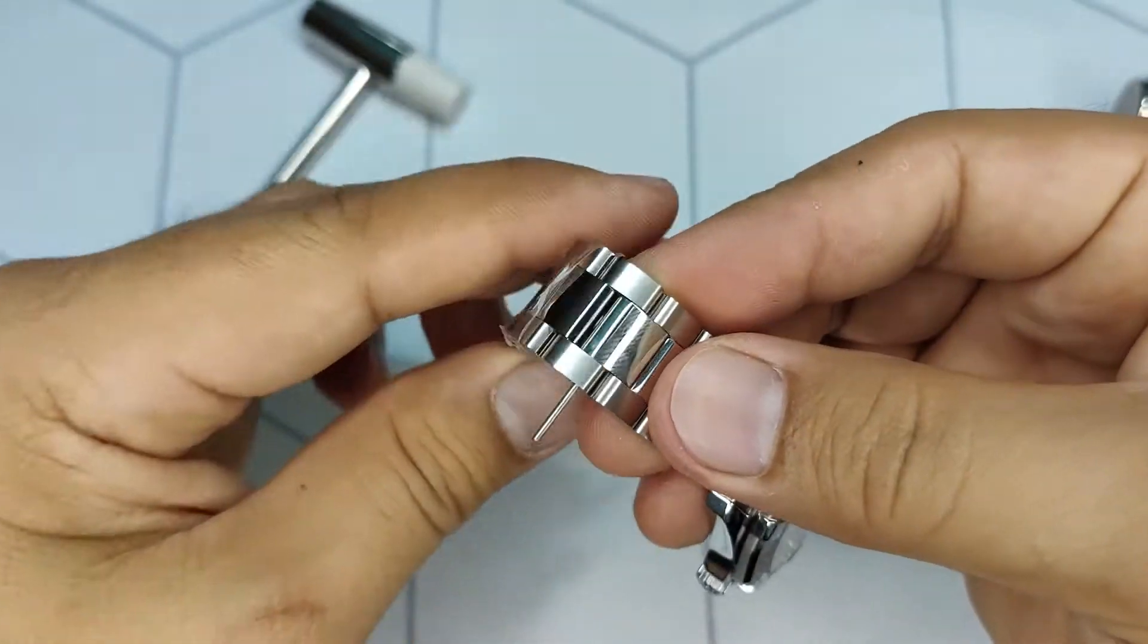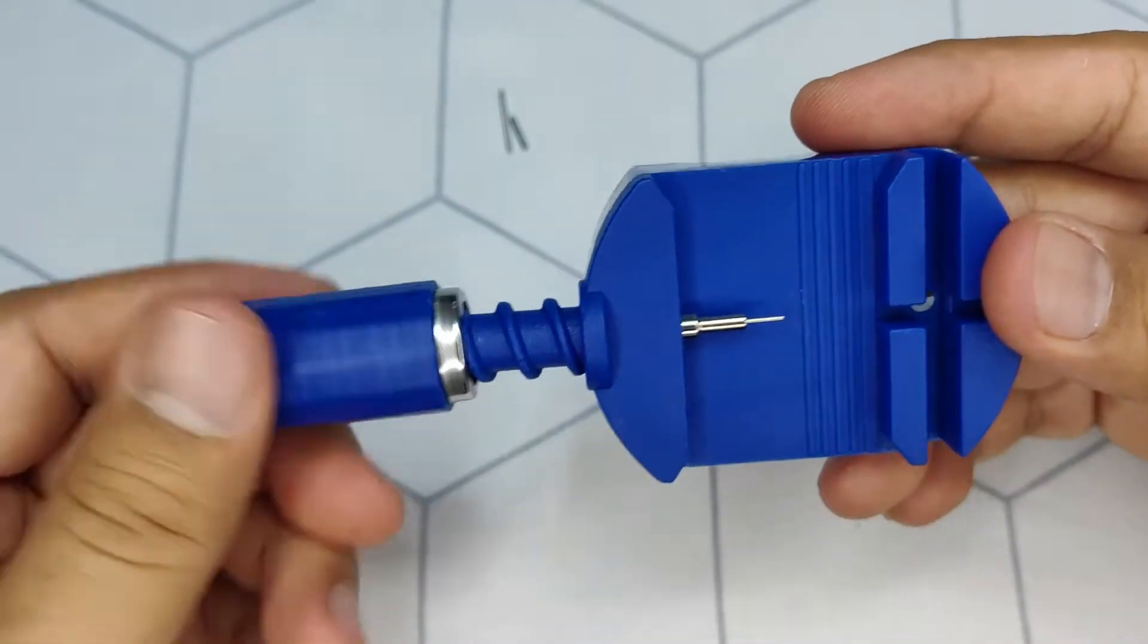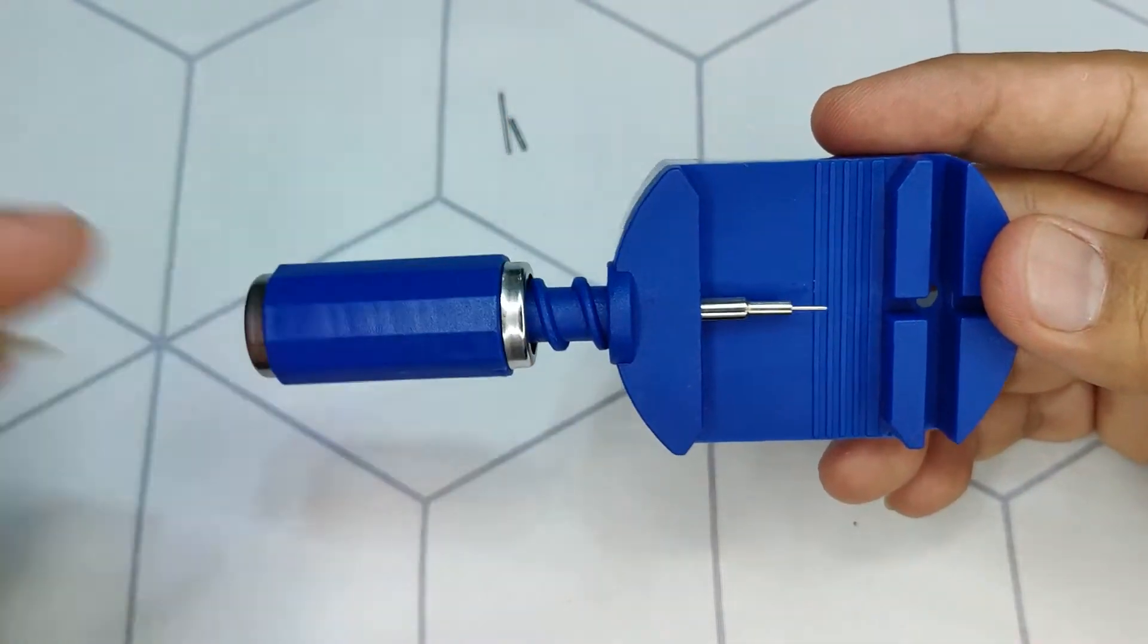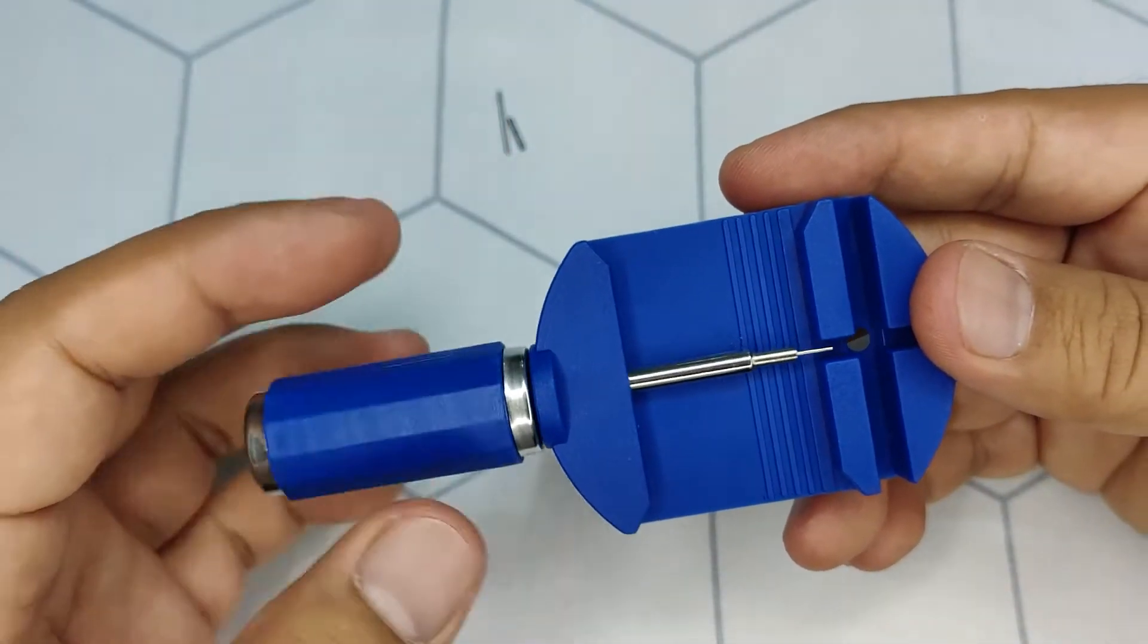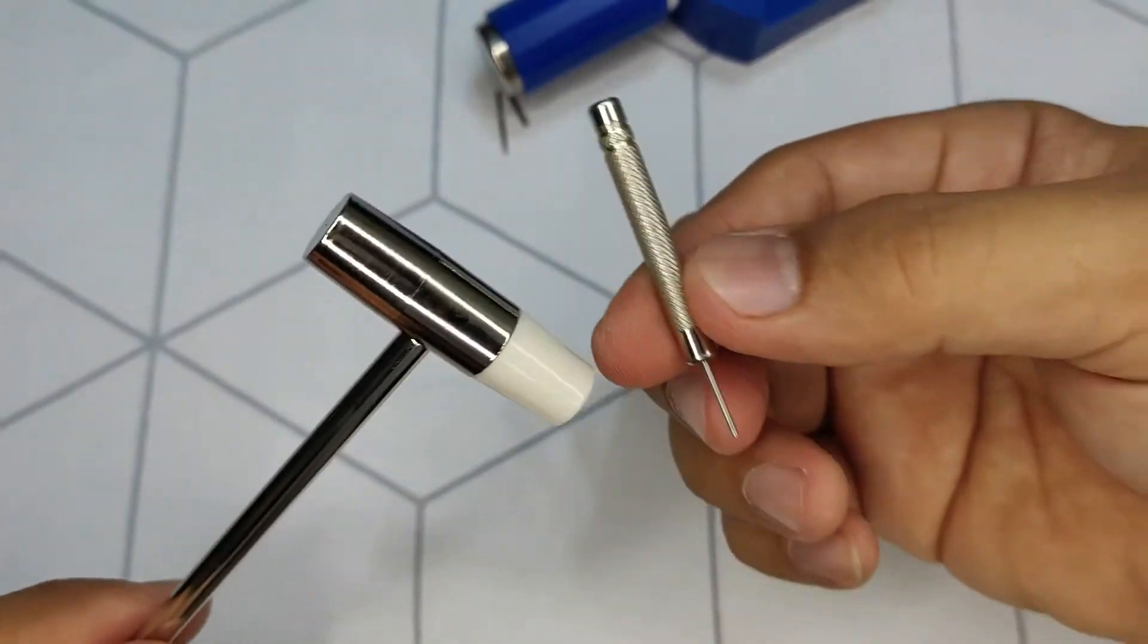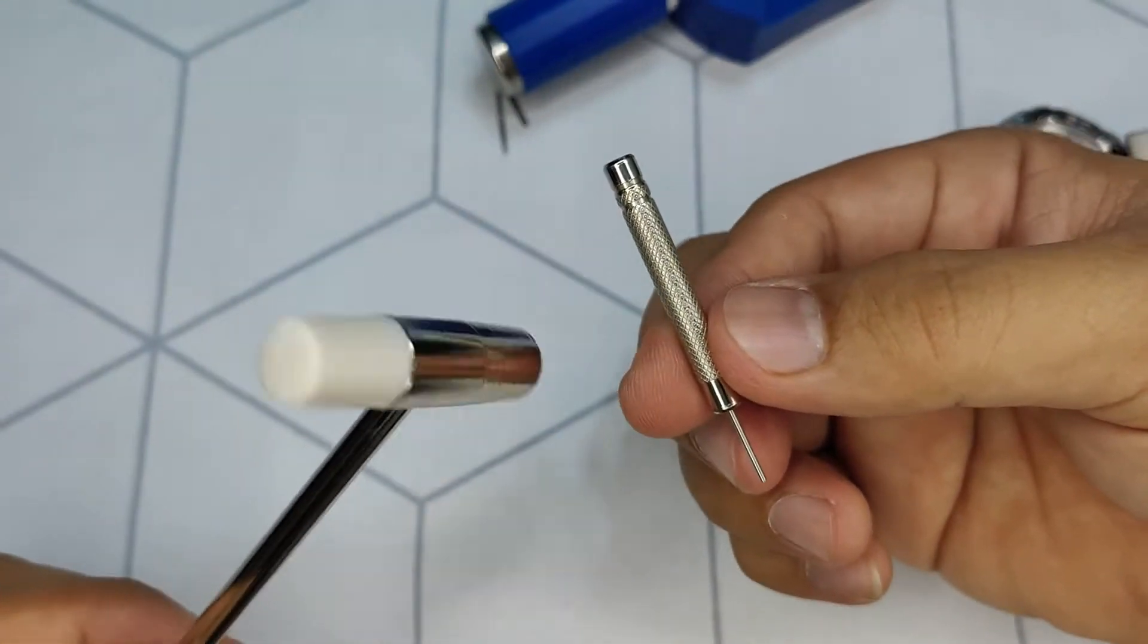I will be showing you two different procedures on the adjustments. The first way is to use a watch pin removal tool, and the second is by manually removing the bracelet with a watch hammer and pin pusher. So stay tuned!